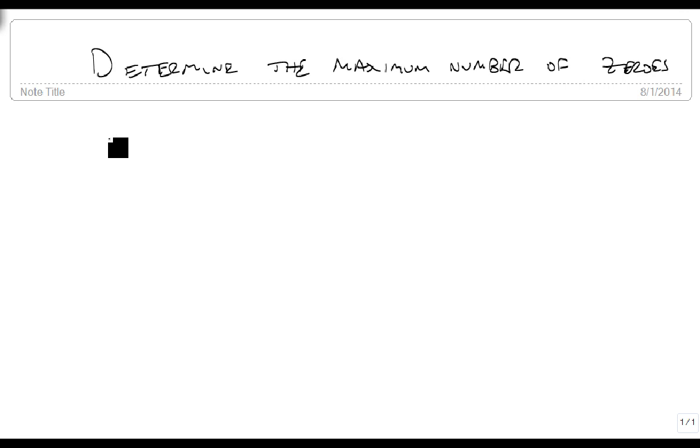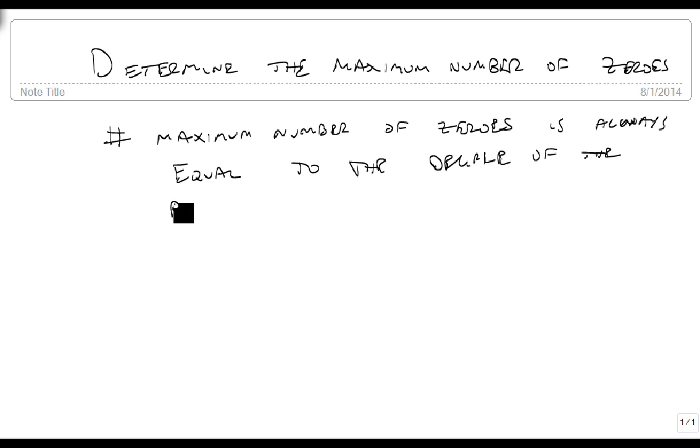It turns out that the maximum number of zeros is always equal to the degree of the polynomial function. Now this only works if it's a polynomial function. So whatever the degree of the function is, that's the maximum number of zeros.